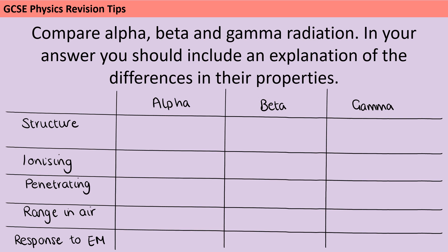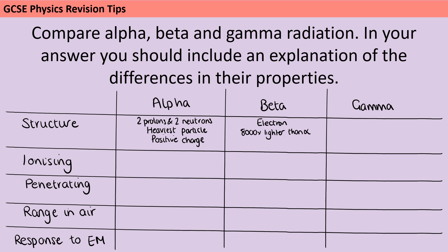In terms of their structure, an alpha particle is a helium nucleus — in other words, two protons and two neutrons — which means it's the heaviest of the particles and also has a positive charge. Your beta particle is a fast-moving electron that's been released from the nucleus of a radioactive atom. It's about 8,000 times lighter, because an electron is about 2,000 times lighter than a proton or a neutron, and it has a negative charge. Those ideas about mass and charge are going to be important when we come to explain the properties.